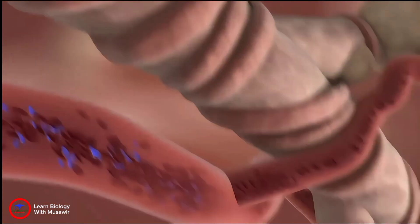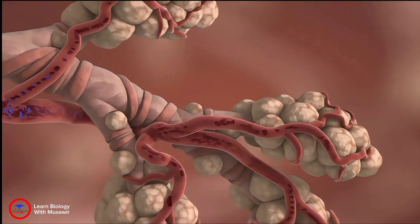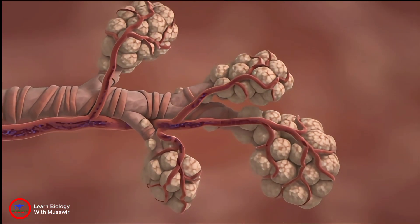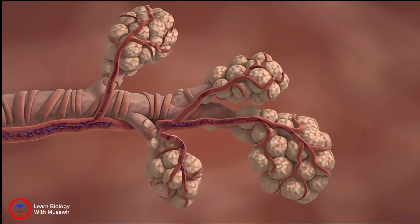In the lungs, the signaling molecule docks on muscle cells wrapped around bronchioles, but these cells relax instead of contract to allow more oxygen into the blood.